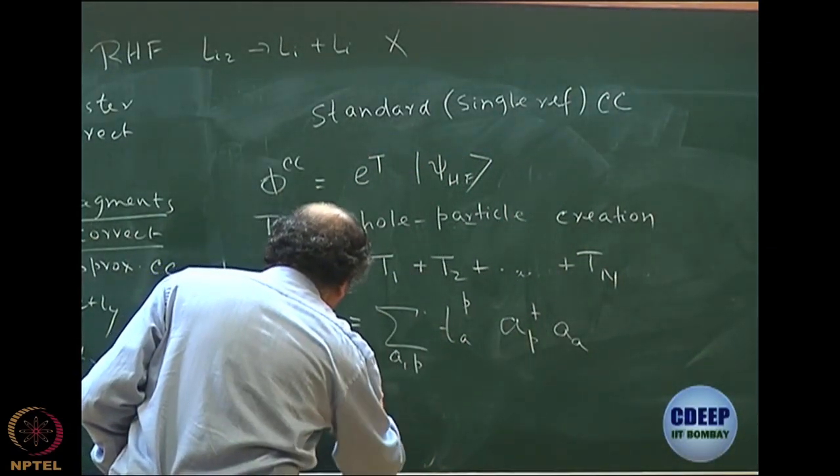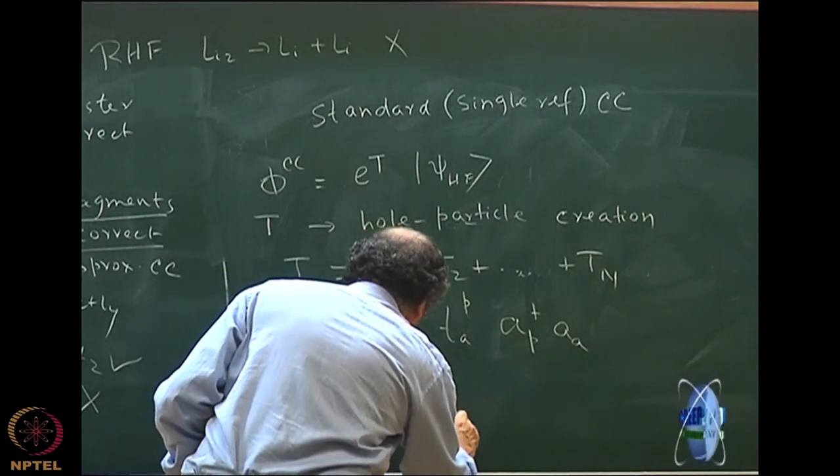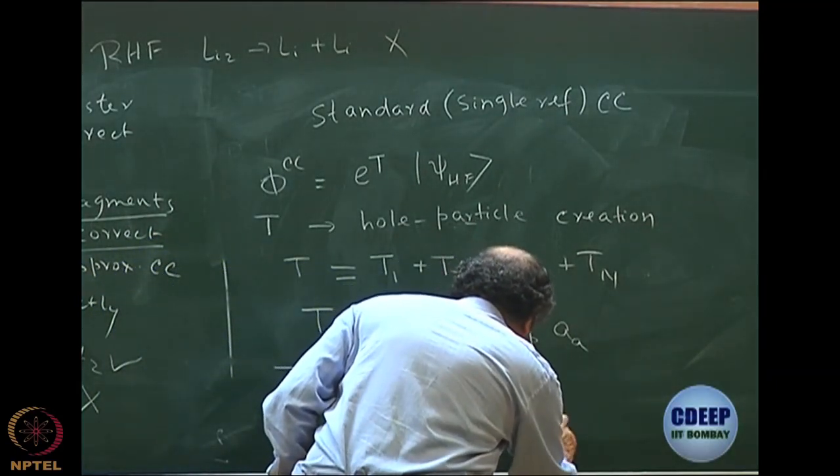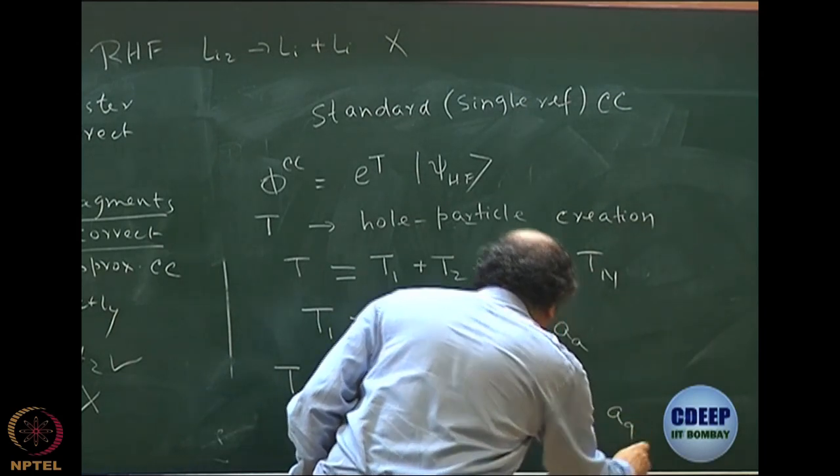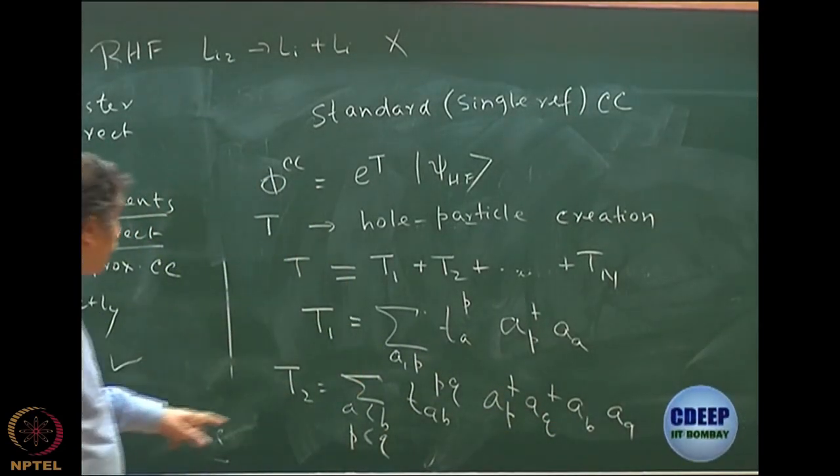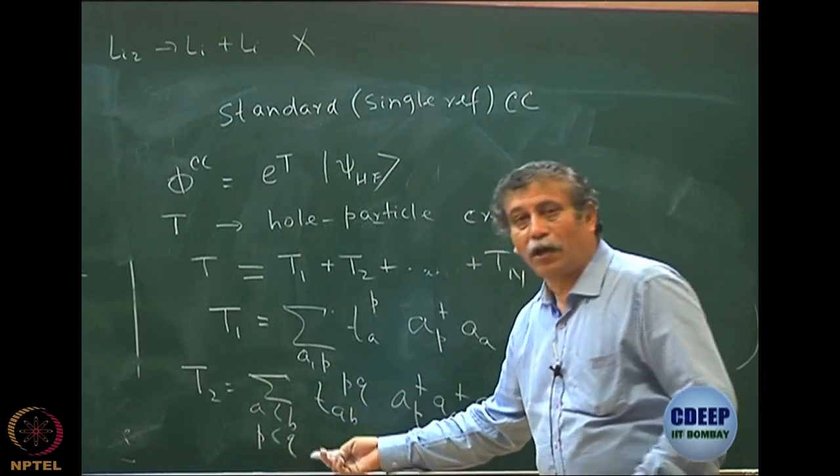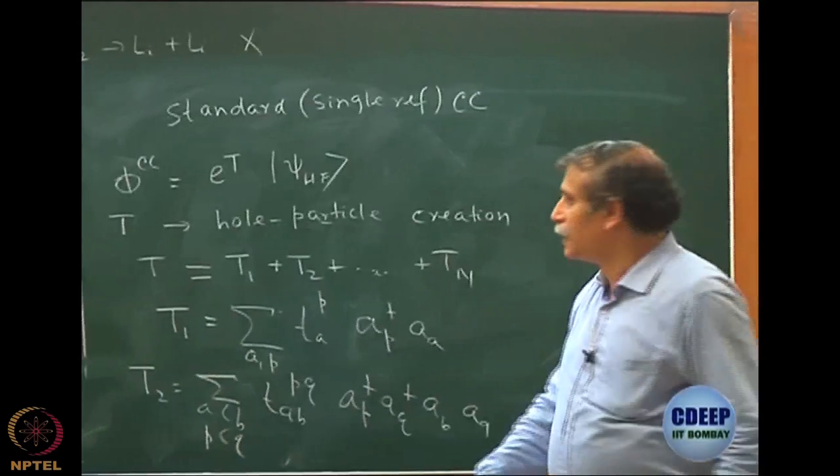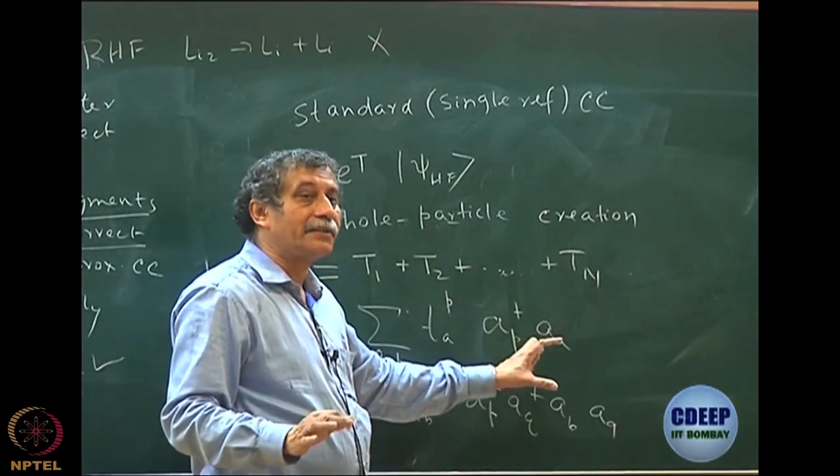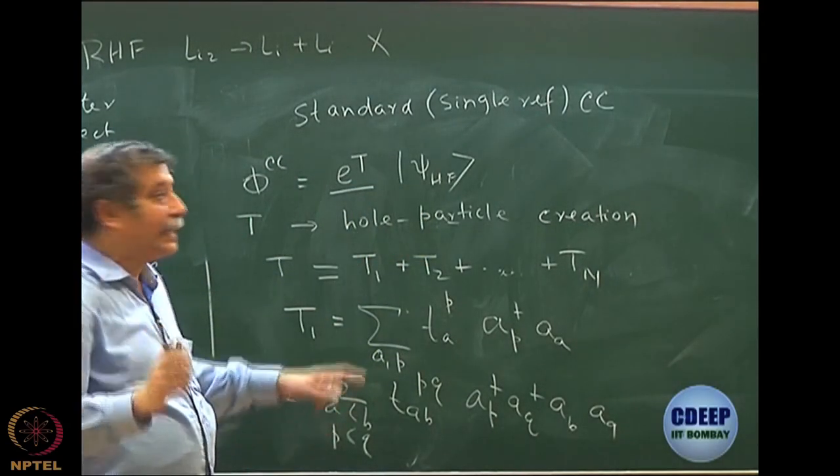Similarly, I can write T2 as sum over A less than B, P less than Q. This is all doubles. I write t_AB^PQ just like I used to write in CI C_AB^PQ, remember? So I am writing t_AB^PQ, a_P† a_Q† a_B a_A. Again note the order because I want B to be replaced by Q. So the order has to be changed in second quantization. Just like I wrote the 2 electron operator and I have t_AB^PQ and I made it A less than B, P less than Q. If you make this all A, all B, all P, all Q, you have to put a factor 1 by 4. These are all spin orbitals. So similarly, I can generate T3, T4, etc. Each of these acting on ψ Hartree-Fock will actually generate determinant. But it is not CI because the final wave function is not 1 plus T1 plus T2 plus Tn. That is the difference from CI. It has an exponential T. So the product will come and hence lots of nice things which have to be taken care of are taken care by coupled cluster.